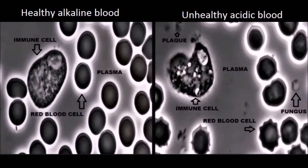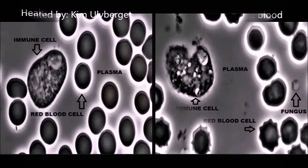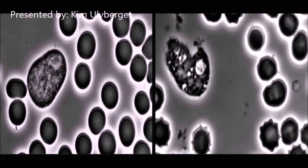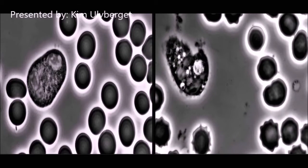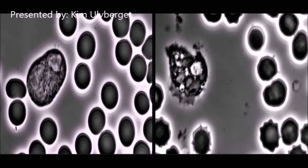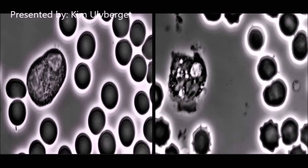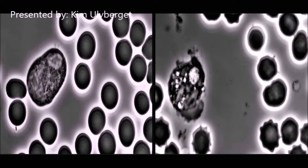On the left screen you can see the healthy blood and immune cell. Notice how clean the blood looks and how evenly shaped the cells are. These red blood cells are able to transport oxygen around your whole body and take carbon dioxide with them back to the lungs for extraction.